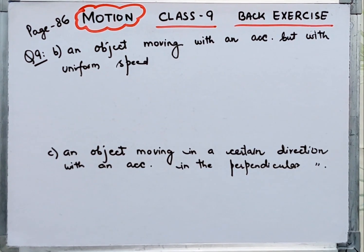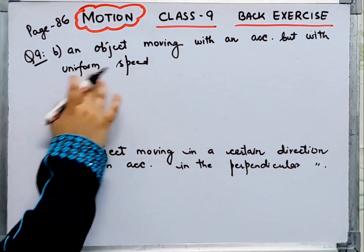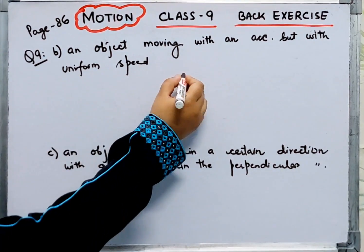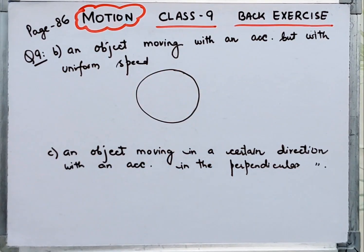Its part b is an object moving with an acceleration but with uniform speed. So suppose if you look at circular motion.